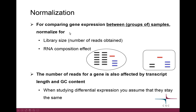One might want to normalize for different situations. Our situation is that we want to compare gene expression levels between groups of samples. We need to account for the total number of reads from each sample, and we also have this composition effect, which I'll try to illustrate.